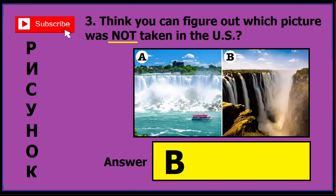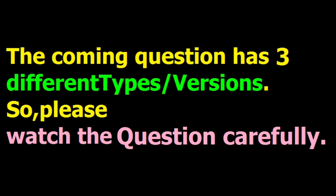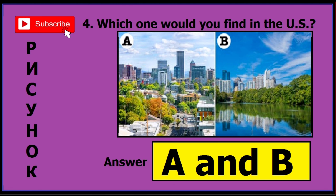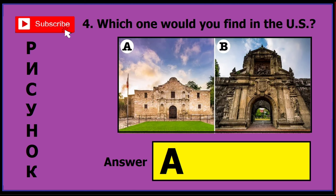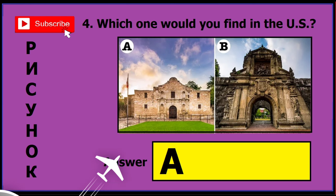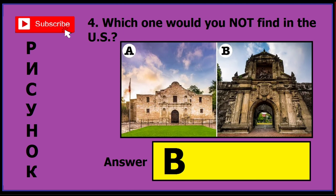Read the question very carefully. This coming question has three versions, so you need to be very careful while reading and watching the image. In version one, if you see this image, the correct answer is A and B. In version two, if you find this image and question, just click A. In version three, the question is the same as version two but asks 'which one would you not find in the image?' — the correct answer is B.